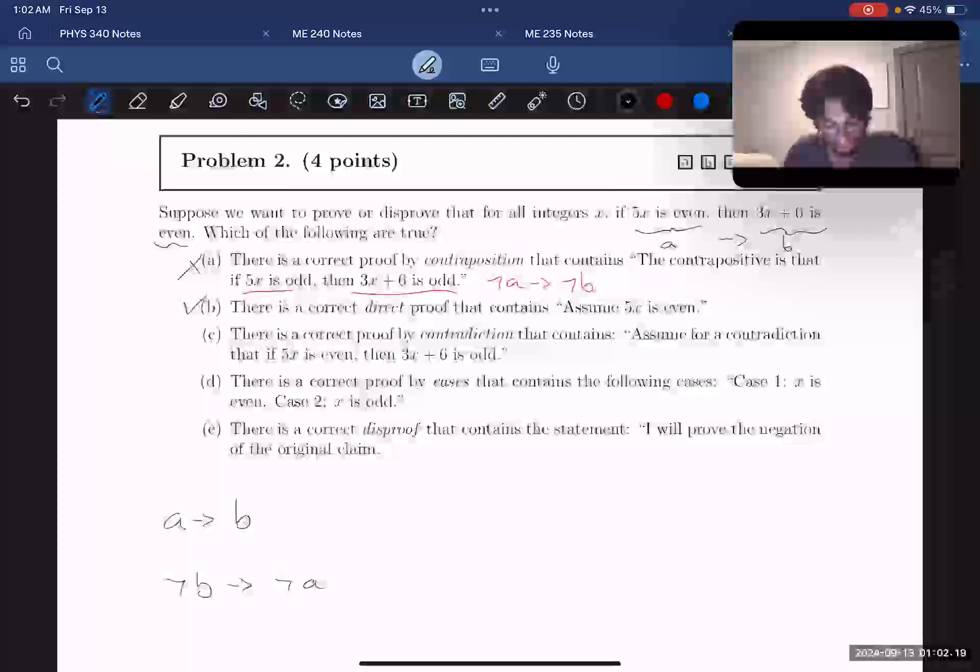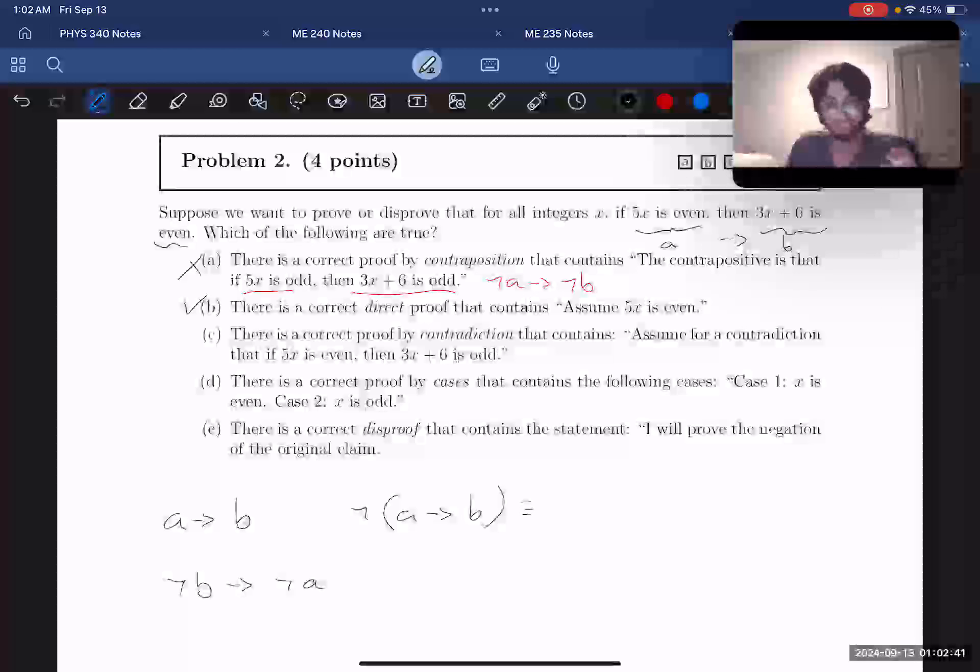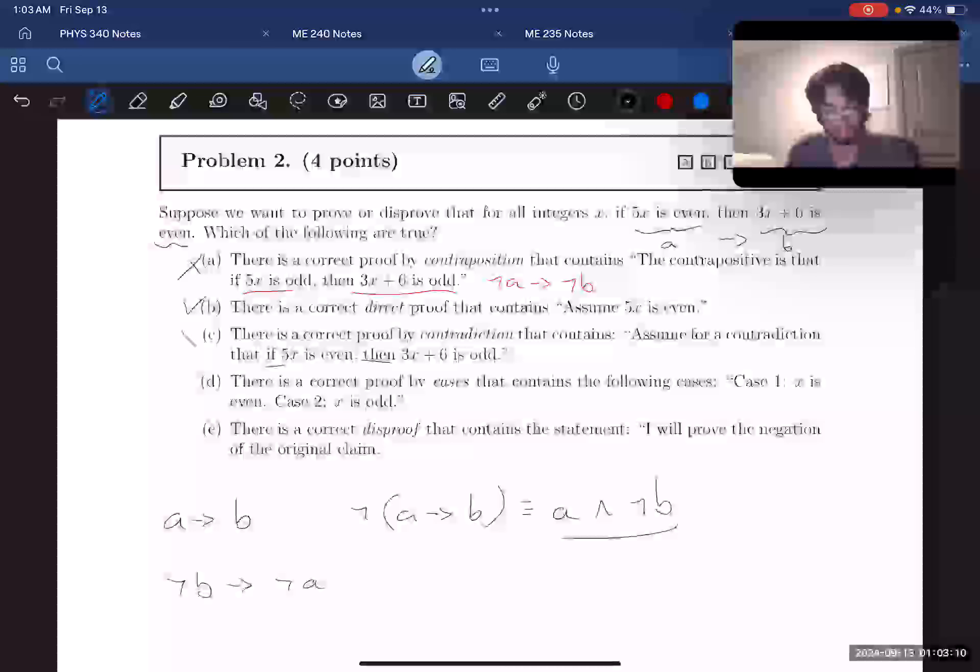For answer C, there is a correct proof by contradiction that contains, assume for a contradiction that if 5x is even, then 3x plus 6 is odd. Let's think about our definition for a contradiction. If we have our statement A implies B, then we would need to negate it to get our contradiction. Using implication breakout, we know that this is equivalent to A and not B. What would A and not B be in this situation? It would be 5x is even and 3x plus 6 is odd. However, for part C, we see that we have an if-then statement, which doesn't exist anywhere in our negation. So C must be incorrect.